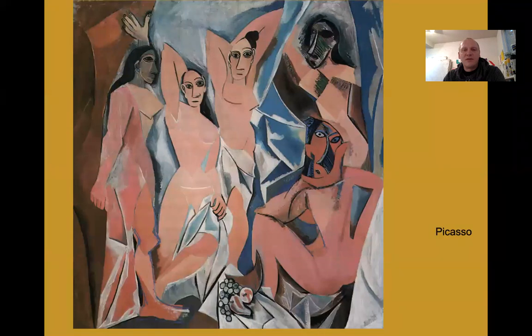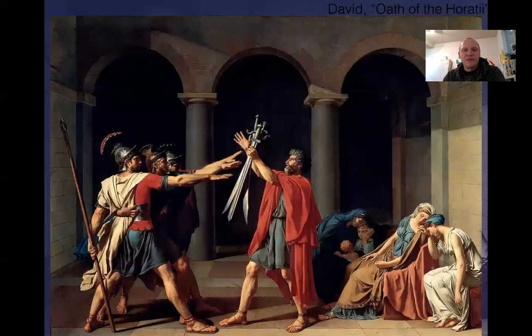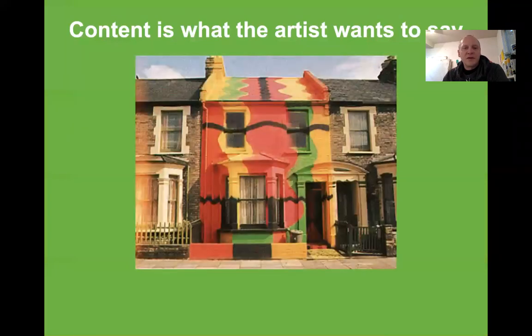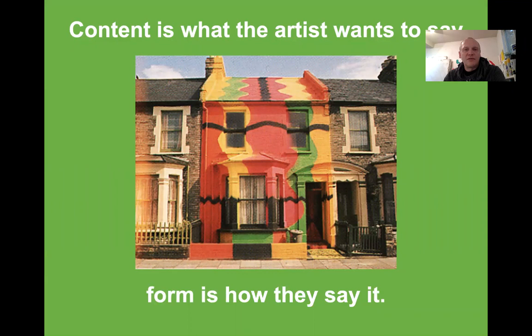Very different — here's a grouping of women painted by Picasso, done in a cubistic style. So the form here is quite different than what we saw before. Content is what the artist wants to say, and form is how they say it.